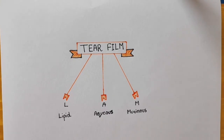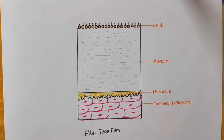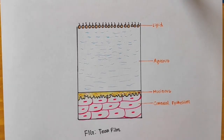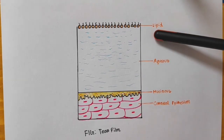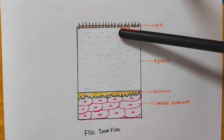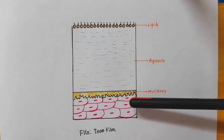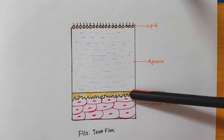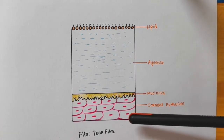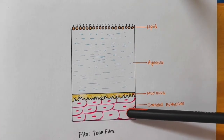Now I am going to show you a picture of tear film. You can see three individual layers from this picture. From the outside it is the lipid layer, then the aqueous layer, and then the mucinous layer. And there is the corneal epithelium.